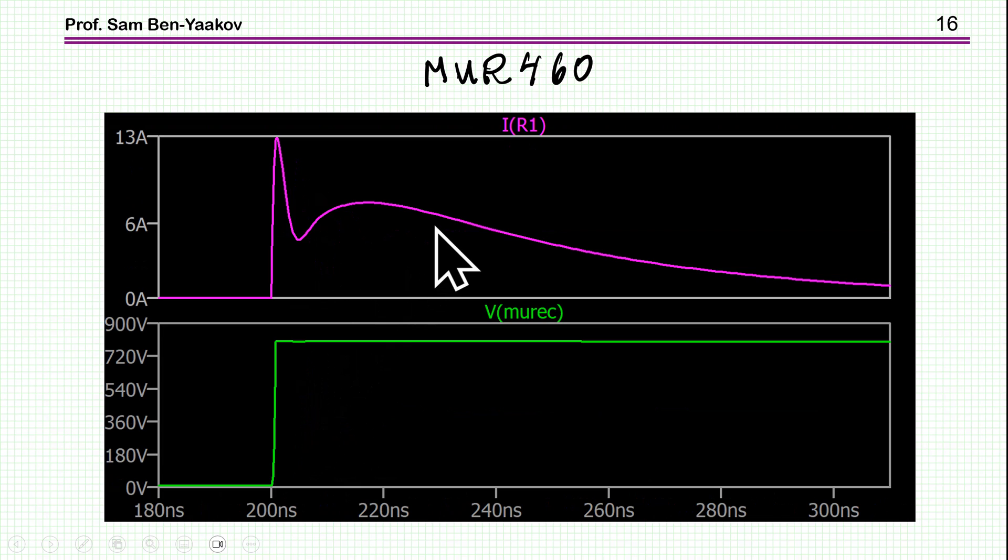But if I do the same thing with the fast diode MUR460, then you see that we have pretty much like this ESD capable rectifier. Again, I don't know if the models are correct. And this is just the LTSPICE simulation. But the point is that obviously there are some diode that will withstand it and some diode that will not. And there is no question about it. But if you have a diode which is specified as ESD capable, it means that it will be able to handle this pulse and the current associated with it.